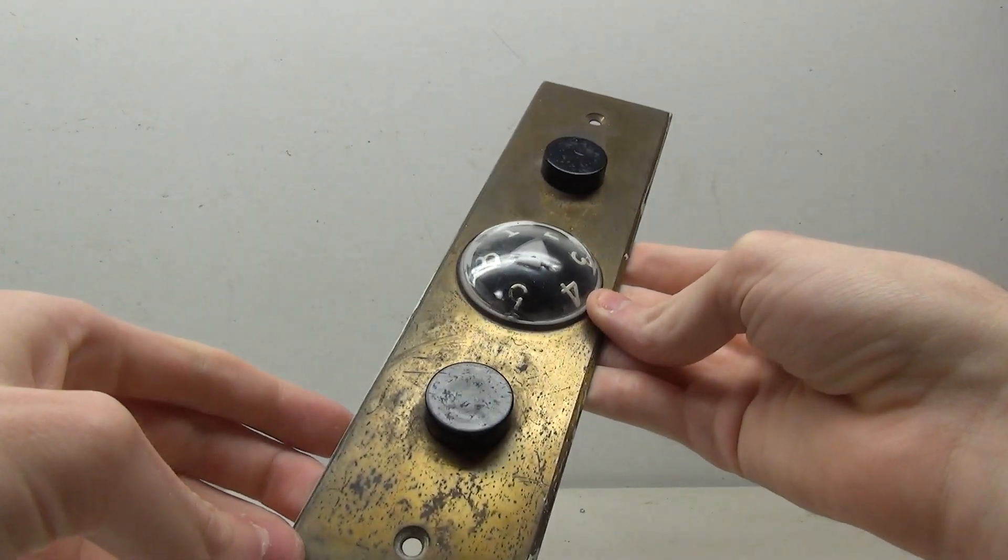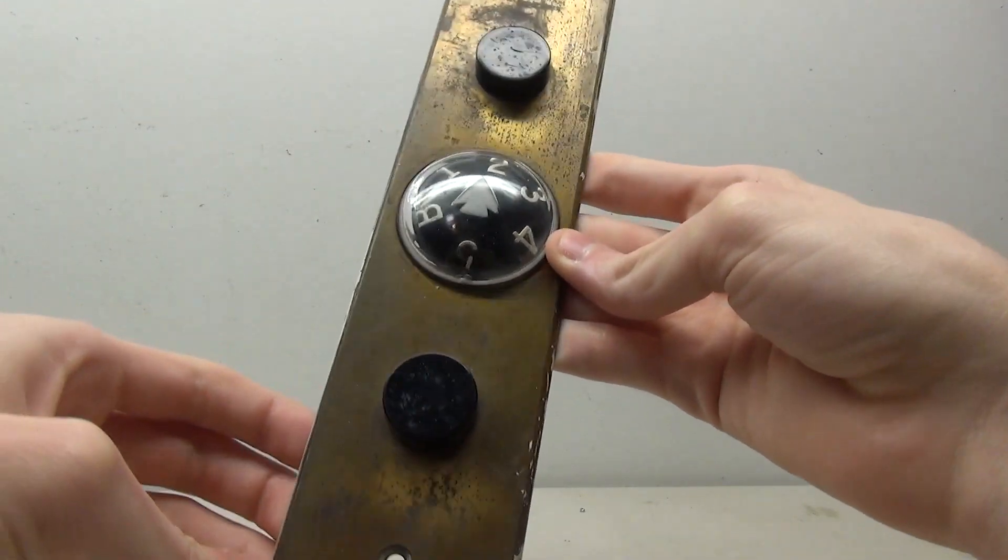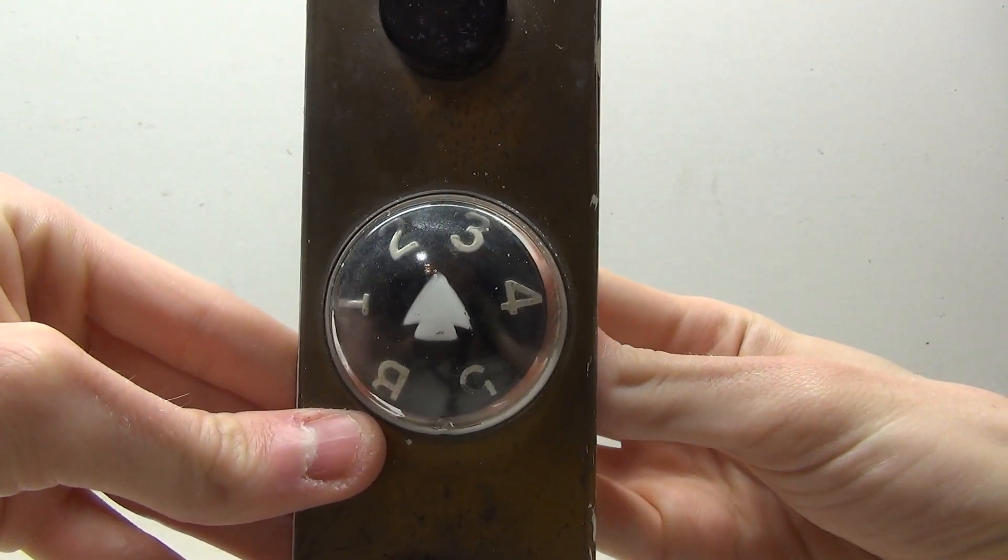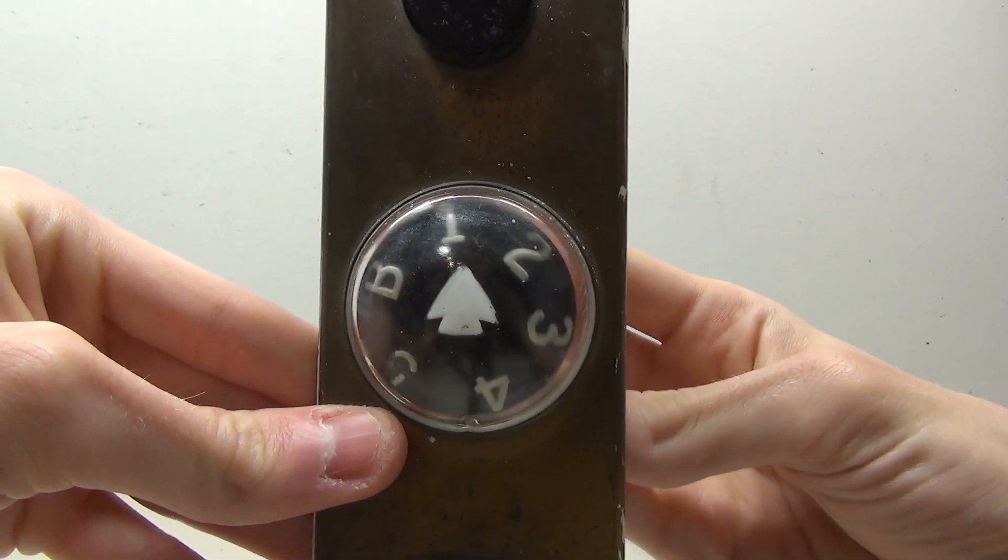So this here is an old Otis black button call station that has this really interesting floor indicator. This was the older rotodial style indicator.